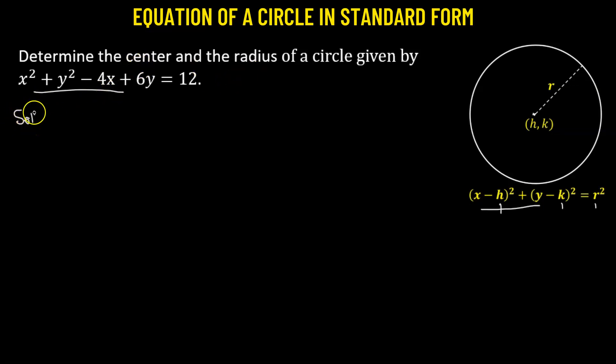So let's begin. We'll start with our given equation: x squared plus y squared minus 4x plus 6y equals 12. We'll combine the terms containing x, so we have x squared minus 4x, and then we will combine the terms containing y: y squared plus 6y, and that equals 12.